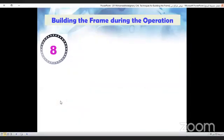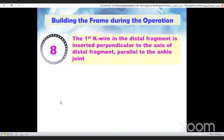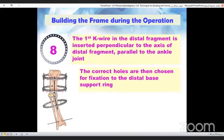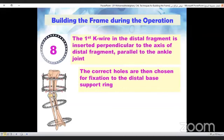In step eight, insert the first key wire in the distal fragment perpendicular to the axis of distal fragment parallel to the ankle joint. Then fix the distal base support ring with the key wires.